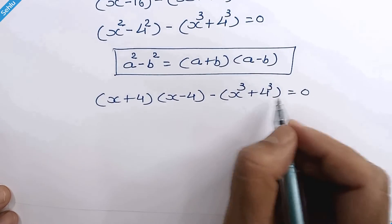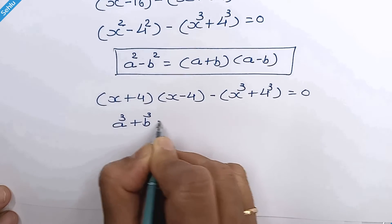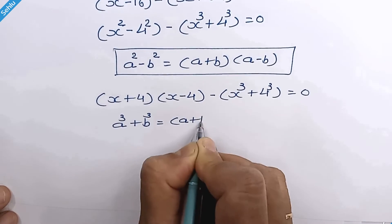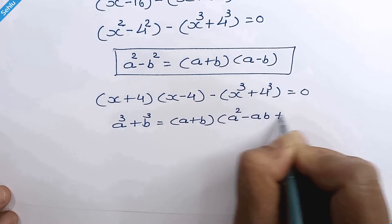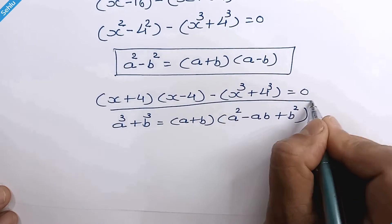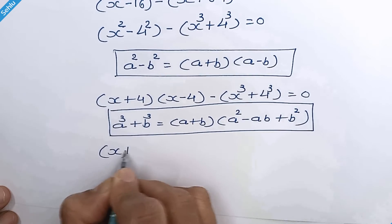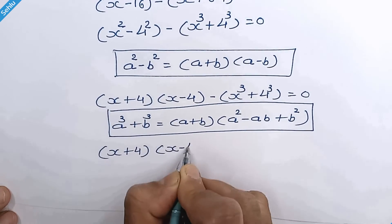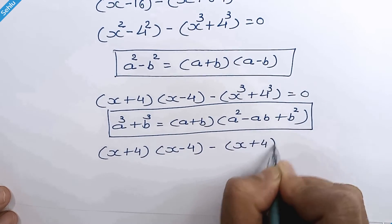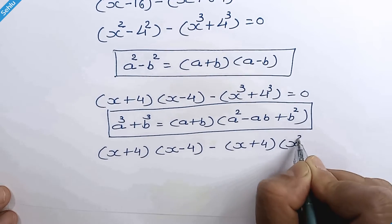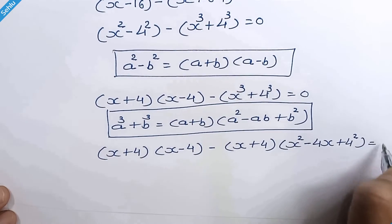And here we have another identity: a cubed plus b cubed, which can be written as a plus b times a squared minus ab plus b squared. So we have x plus 4 times x minus 4 times x plus 4 times x squared minus 4x plus 4 squared is equal to 0.